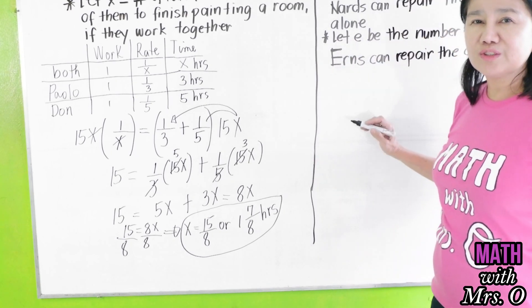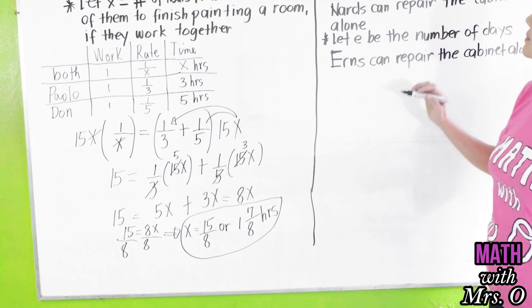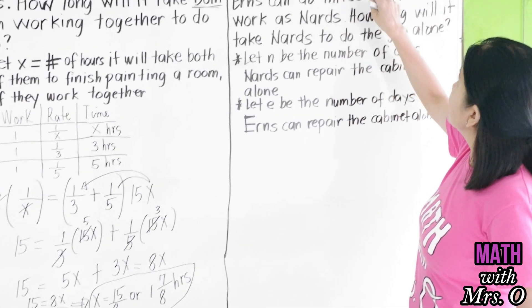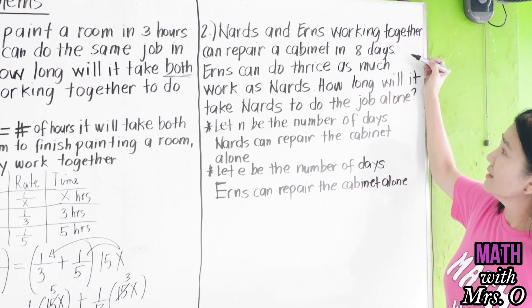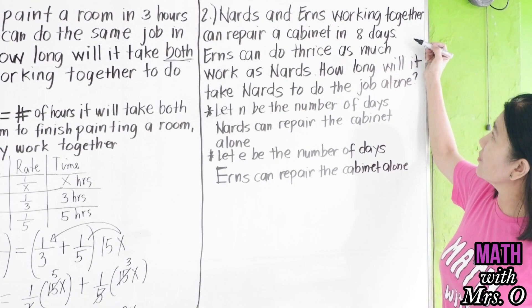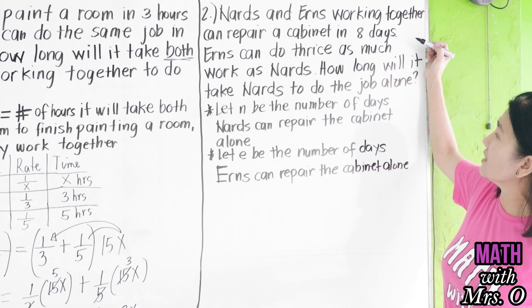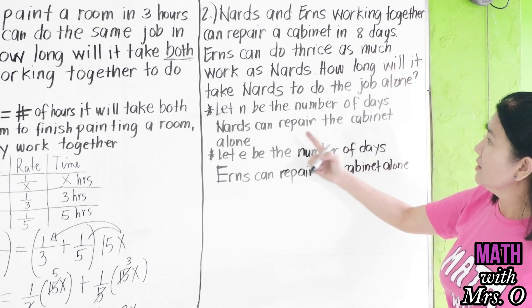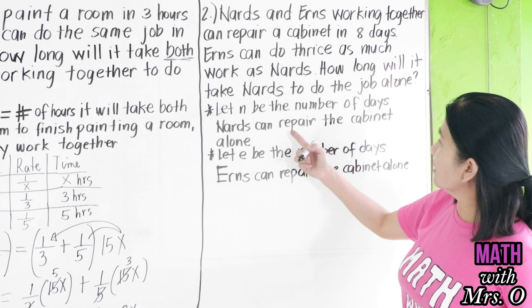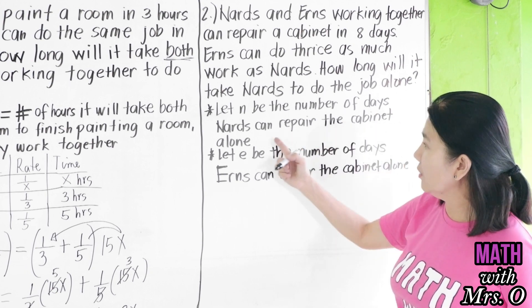Now, let's move on to problem number 2. Nards and Erns working together can repair a cabinet in 8 days. Erns can do thrice as much work as Nards. How long will it take Nards to do the job alone?